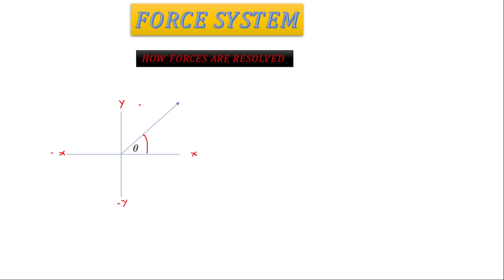So with this force — let's call it F — when resolving in the x component you're going to get F cos θ. With the y component, you always use sine. Since y is also positive, you're going to get F sin θ. That's how you resolve forces in the first quadrant.